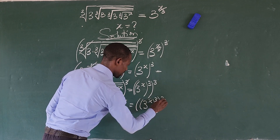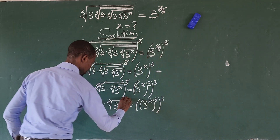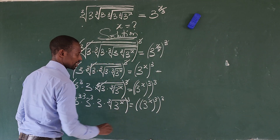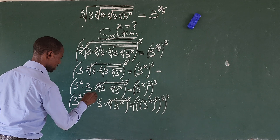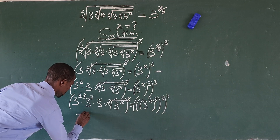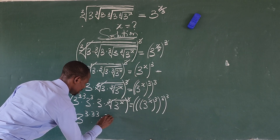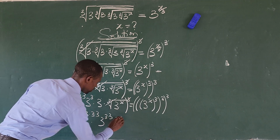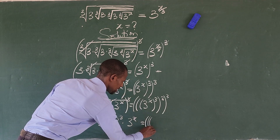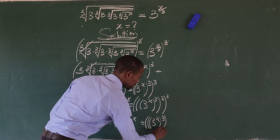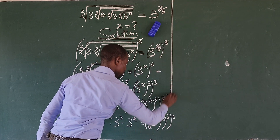We take the cube one final time to eliminate the last radical. Raising both sides to the power of 3, we get 3 to the power of 3 times 3 times 3, then times 3 to the power of 3, times 3 to the power of 3, times 3 to the power of x. This equals 3 to the power of x, all raised to the power of 3, to the power of 3, to the power of 3.